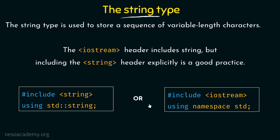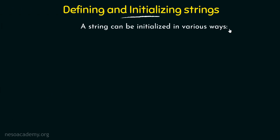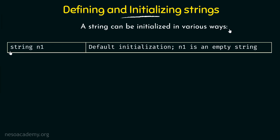Let us see how we can define and initialize String types — a String can be initialized in various ways. The most standard or default initialization is where we say String and the name of the String, for example n1. This is the default initialization and it yields an empty String, the same way we declare other types like integers and characters. Here we are not assigning anything, so n1 would be an empty String.